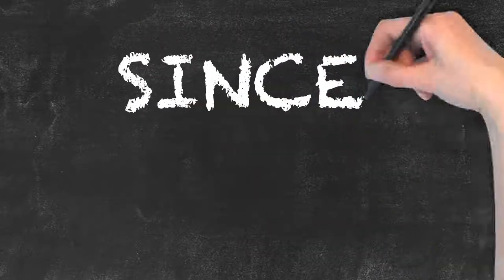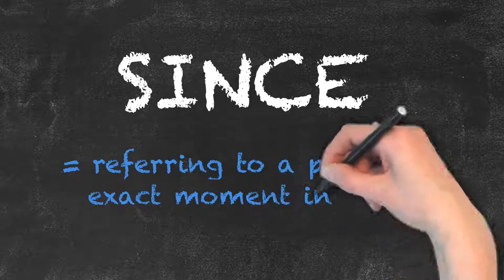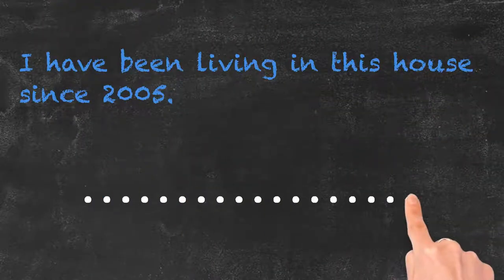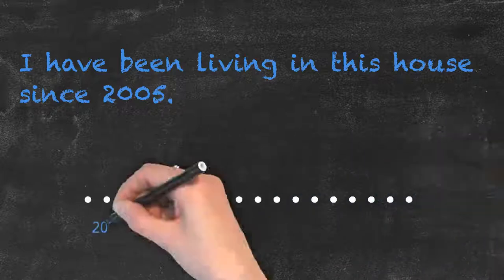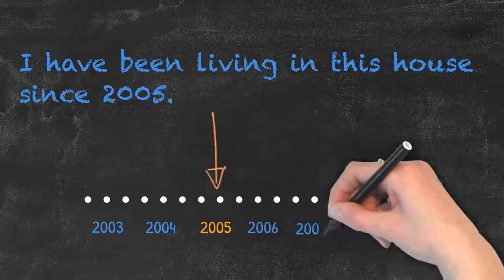Let's take a closer look. The word since is used when referring to a point or exact moment in time. For example, I have been living in this house since 2005. 2005 is a point or exact moment in time and therefore we need to use since.